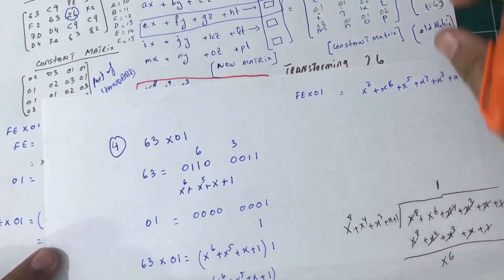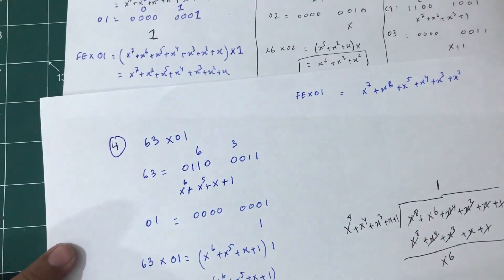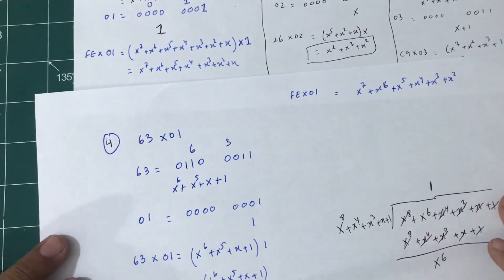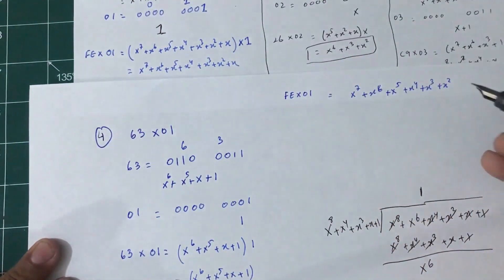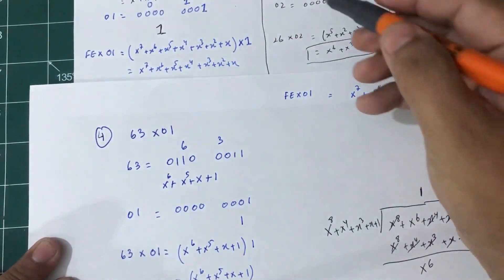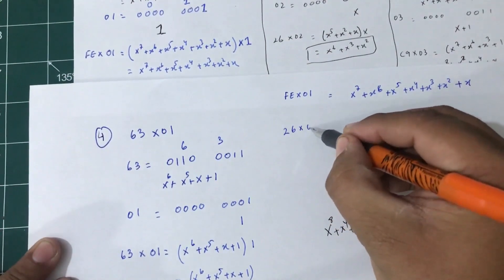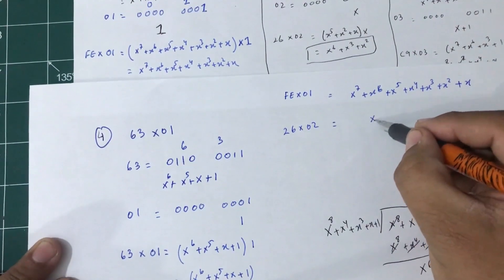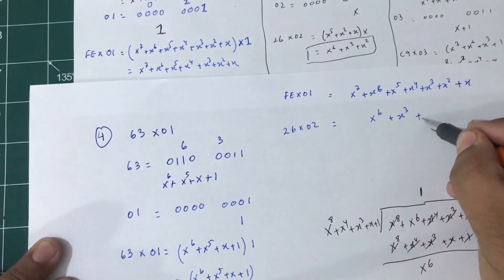I'm sorry you guys were not seeing this. So this is the result I'm trying to copy, which is x to the 2 plus x. When I multiply 26 times 02, I got x to the 6, x to the 3, x to the 2.